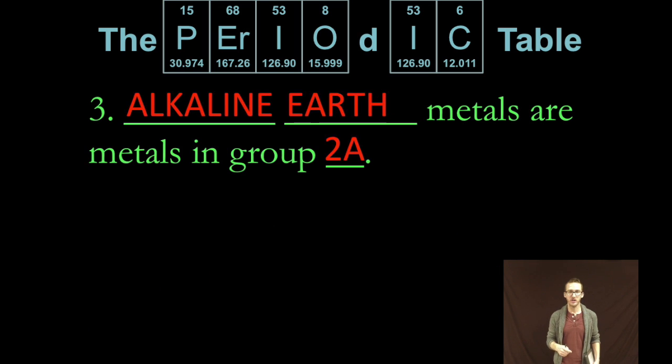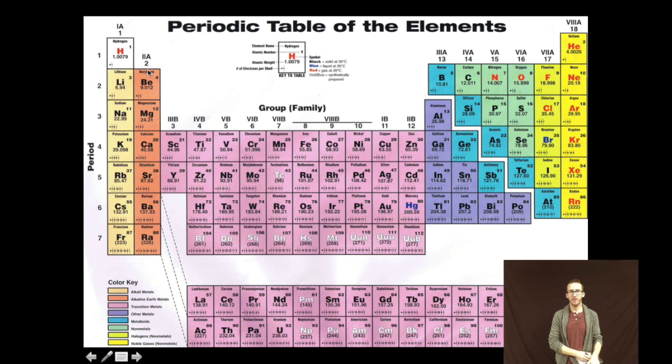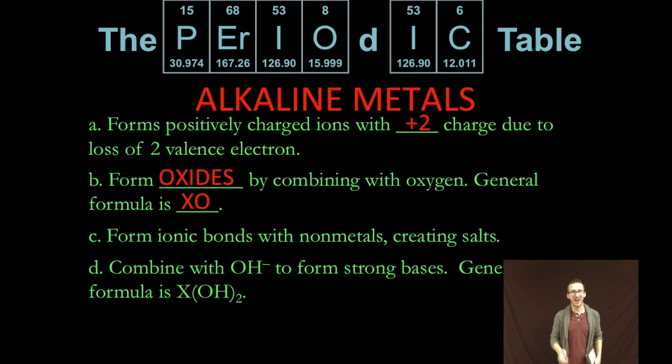In addition to the alkaline metals we also have the alkaline earth metals. And these are your metals in group 2A. On the periodic table these are your metals that are outlined here in this pale orange color. Some important properties of our alkaline earth metals is they're going to form positively charged ions with plus two charge due to the loss of two valence electrons. They will also form oxides by combining with oxygen. However their general formula is going to be XO. They will also form ionic bonds with metals creating salts. And they are also going to combine with hydroxide to form strong bases. The general formula there however is going to be X(OH)2.